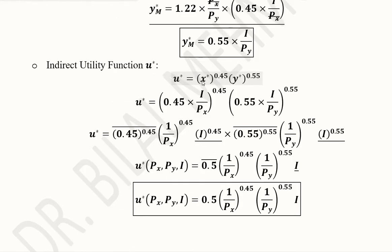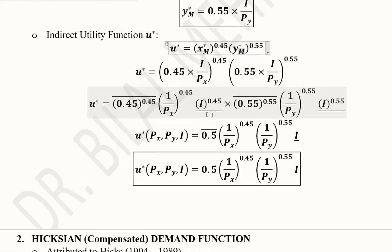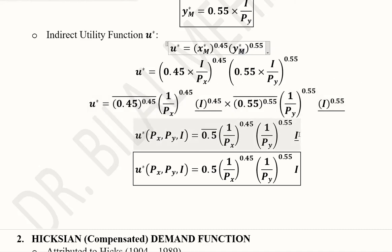Here are the Marshallian demand functions, now labeled with M to indicate they are the Marshallian versions. The next step is the substitution of X asterisk M and Y asterisk M into the original utility function. I collect the constant terms, which sum to 0.5, and the inverse income or budget terms whose powers sum to 1.